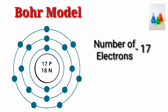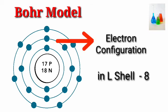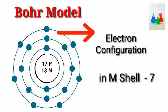Number of electrons: 17. Electron configuration in K-shell: 2. Electron configuration in L-shell: 8. Electron configuration in M-shell: 7.